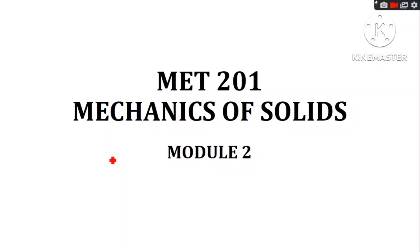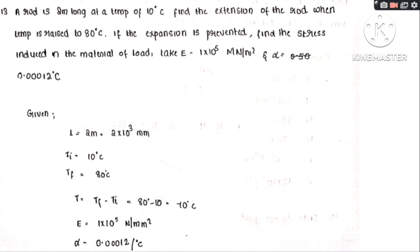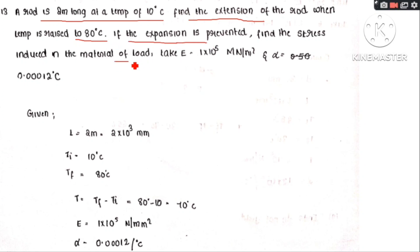Hello students, welcome to another video of Mechanics of Solids. This video is on thermal stresses and thermal strains. First problem: a rod is 2 meters long at a temperature of 10 degrees Celsius. Find the extension of the rod when temperature is raised to 80 degrees Celsius. If the expansion is prevented, find the stress induced. Take E equal to 1 into 10 raise to 5 MPa and alpha equal to 0.00012 per degree Celsius.